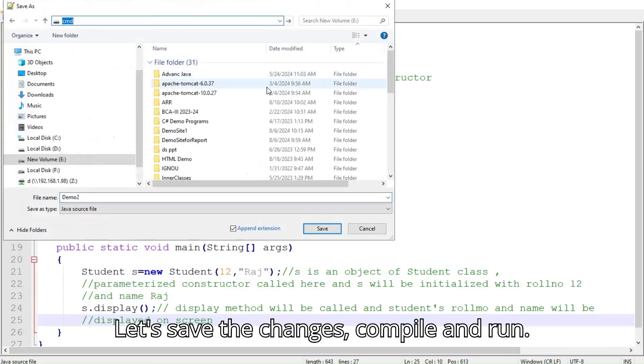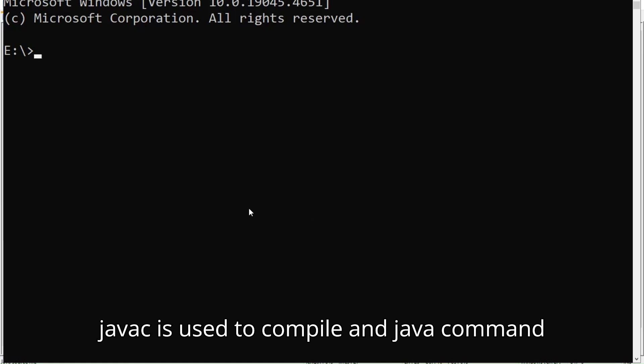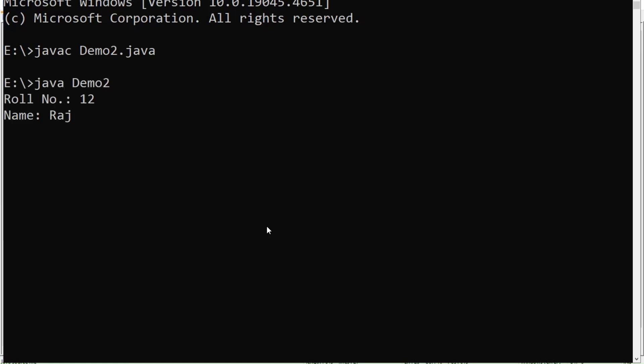Let's save the changes, compile and run. javac is used to compile and java command used to run a Java program. And here is the output.